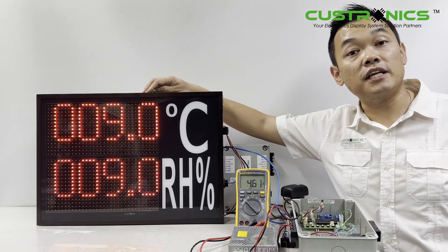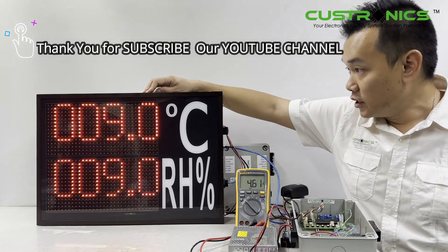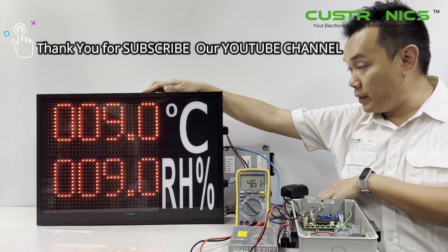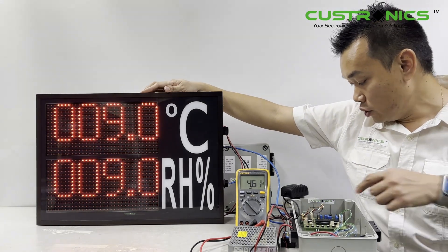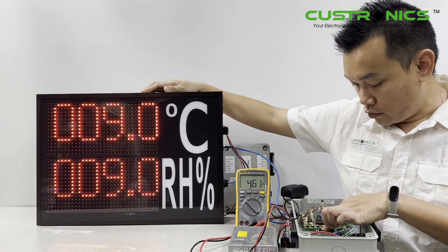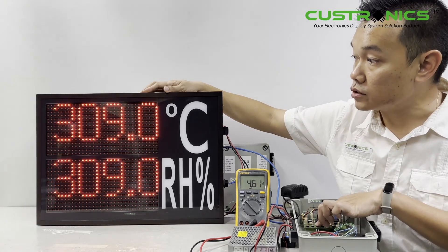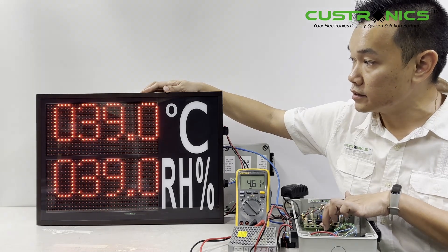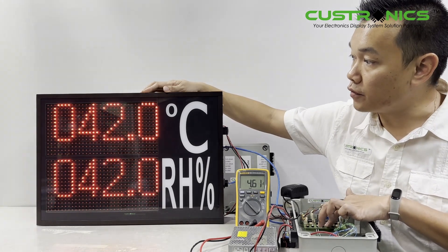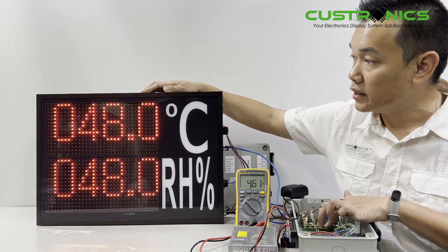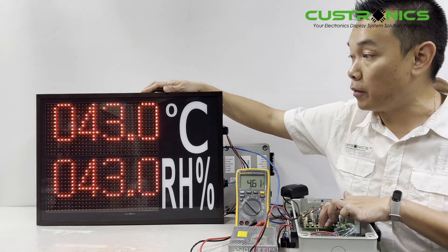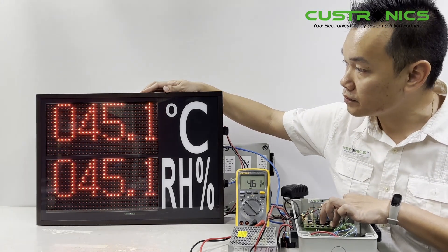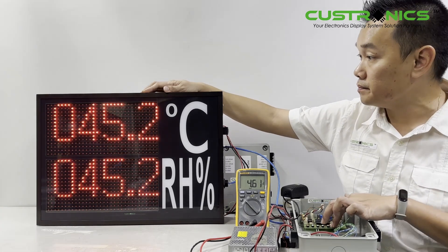This is where you set the minimum and maximum threshold values. For example, the current reading is 46.1. If I want it to blink at 45, I choose the front value, then the third value of 40. Let's say I put 45.2. That means if it goes lower than 45.2, it will blink.